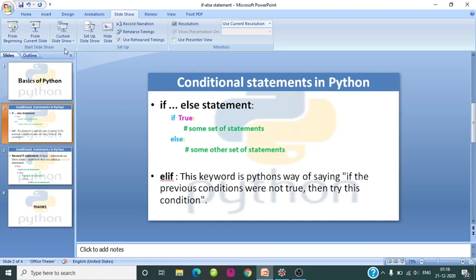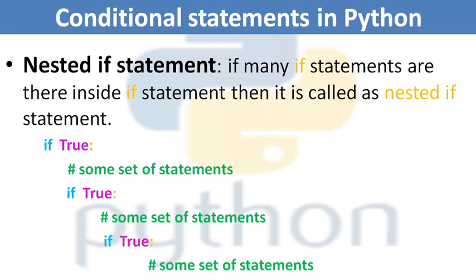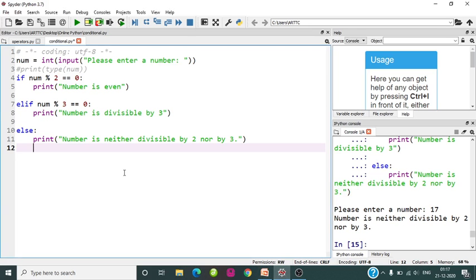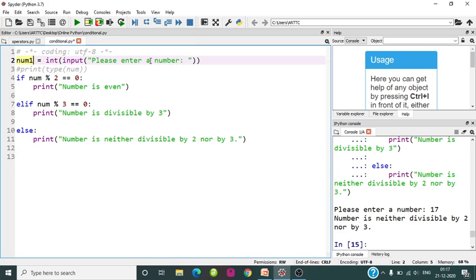Getting back to our presentation — nested if statement. If many if statements are inside a single if statement, it is called a nested if statement. So if the outer condition is true, some set of statements execute, and based on that, if another condition is also met, then another set of statements executes as well. Let us implement this: we will take one more input — num1 — with the prompt 'please enter first number', and then another number.